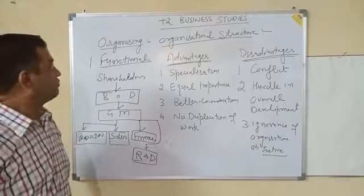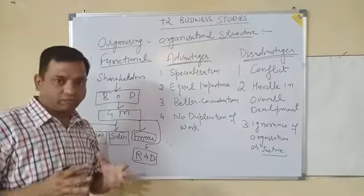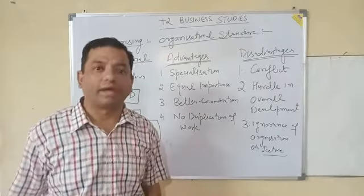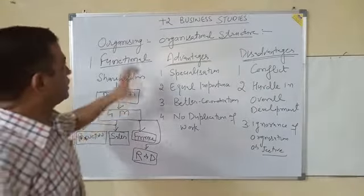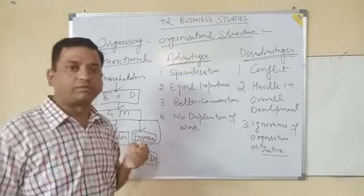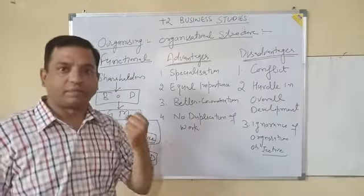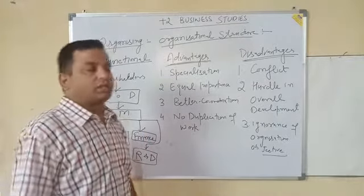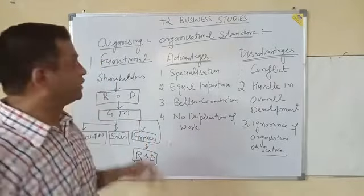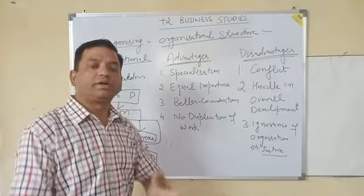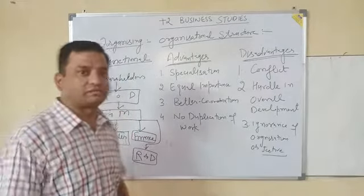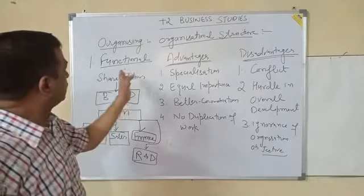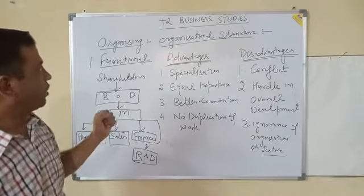The main purpose of an organization is to manufacture a product. In order to manufacture a product, the main work is divided into segments — into different departments. That process is called organizing. In that phase, a company or a manager has to deal with different types of organizational structures.